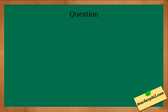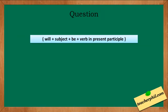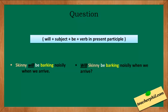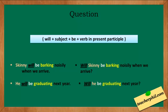For questions using the 'will' pattern, we follow: will + subject + be + verb in present participle — we simply exchange the positions of the subject and 'will.' Examples: 'Skinny will be barking noisily when we arrive.' becomes 'Will Skinny be barking noisily when we arrive?' 'He will be graduating next year.' becomes 'Will he be graduating next year?'